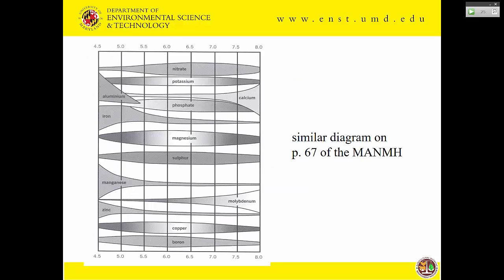A diagram similar to what's in the Mid-Atlantic handbook shows the availability (not just presence) of certain nutrients at certain pH levels from 4.5 to 8. Phosphate is most available in the 6 to 6.5 range — it gets tied up both at high and at low pH. Iron is highly available at acidic pH and becomes less available as pH goes up — one reason you don't want to over-lime your soil. Calcium is abundant at pH 7.5 but really tails off below that.